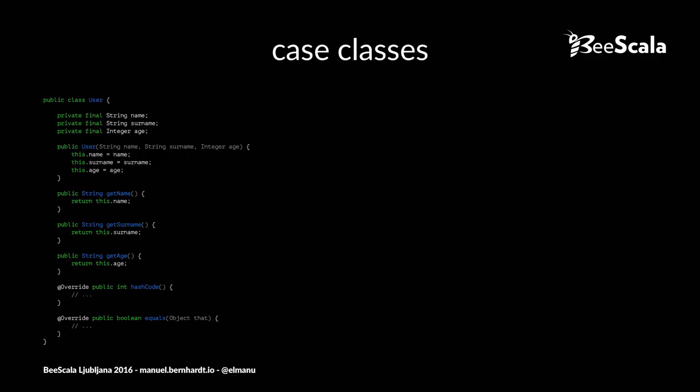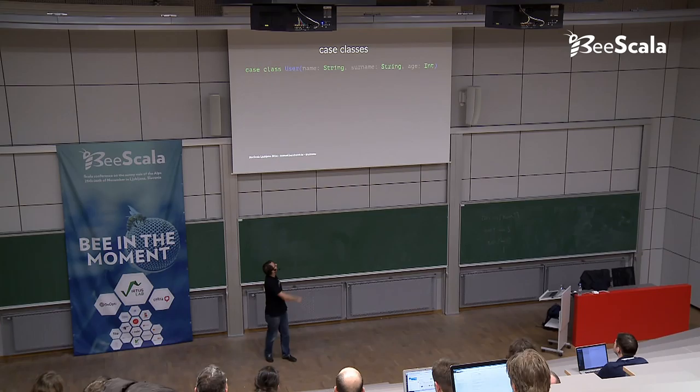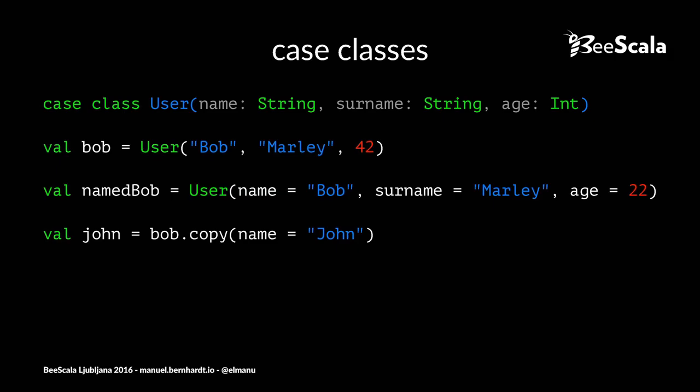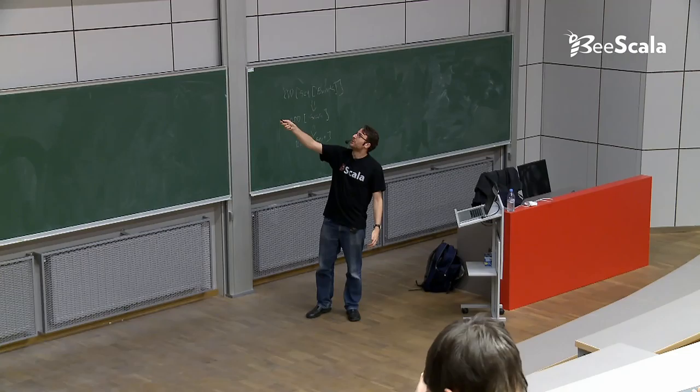Now, the same thing in Scala you do with this line here. It's called a case class. It generates the constructor, it has all the getters, it has equals and hash code. You use it like this. You create a new Bob, either using positional parameters or using name parameters. That's the second one here, which is great when you have many of them.